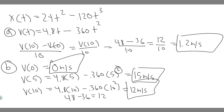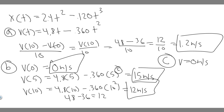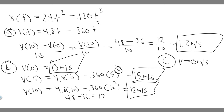Now for part c: how long after starting from rest is the car at rest again? Something is at rest when v equals 0 — when the velocity is 0, it's not moving. So we want to find when v equals 0. The best way to do this is by graphing the velocity function. Take your calculator, go into the graphing menu, and plug in 4.8x minus 0.360 times x squared.